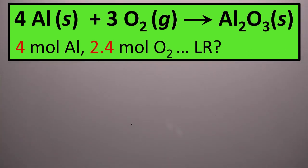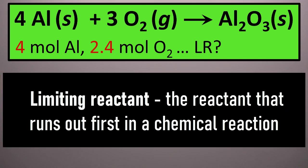Before I do any calculations, I just want to make sure that we're all on the same page with regard to what the limiting reactant is — what the definition of it is. The definition of limiting reactant is the reactant that runs out first in a chemical reaction.